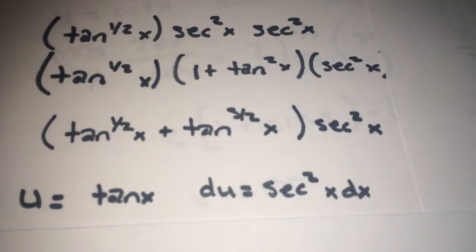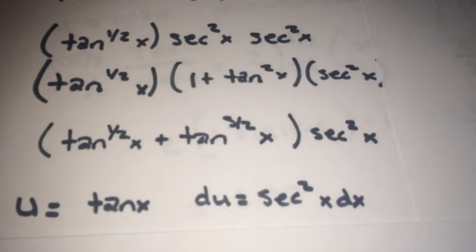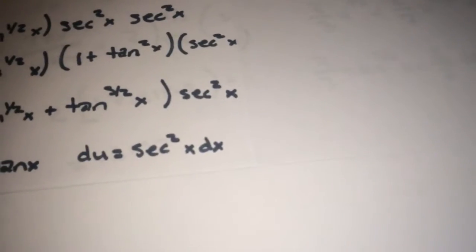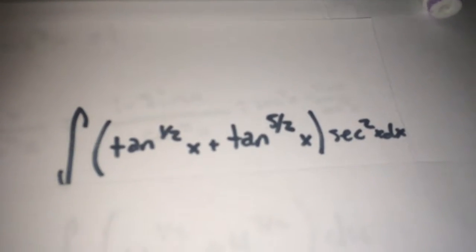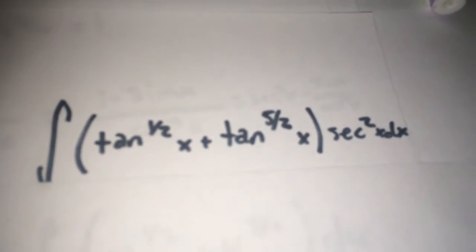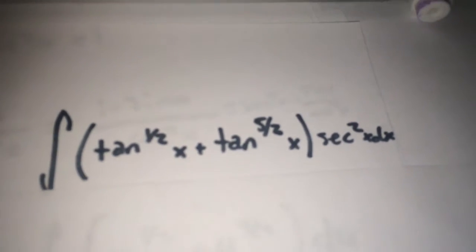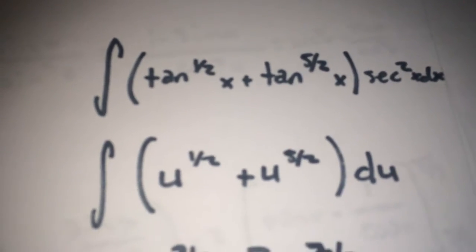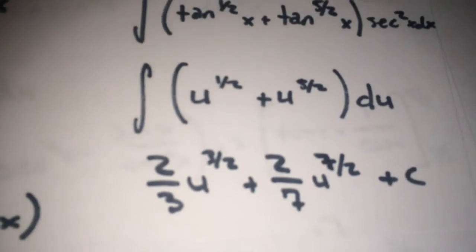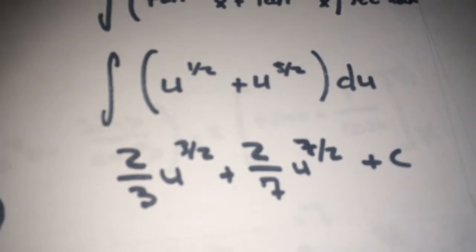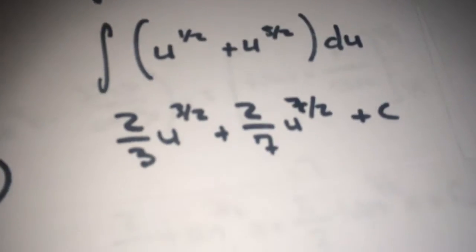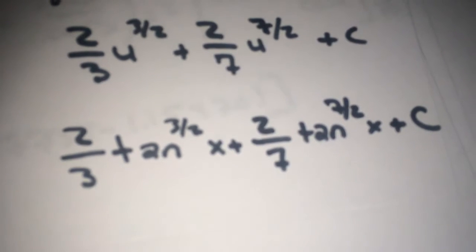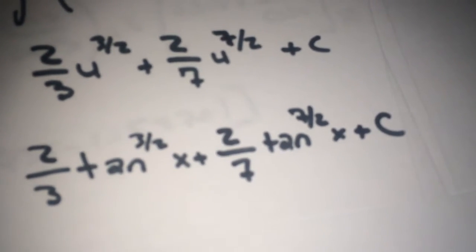Distributing gives tangent to the one half x plus tangent to the three halves x, times secant squared x. Use u-substitution: u equals tangent x, du equals secant squared x dx. Integrating gives two thirds u to the three halves plus two sevenths u to the seven halves, plus c. Plugging u back in, the final answer is two thirds tangent x to the three halves plus two sevenths tangent x to the seven halves, plus c.